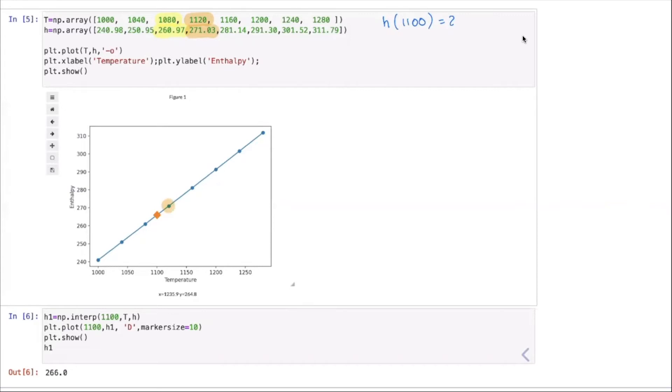This is the second point and the first point is this x1, so let me put the corresponding values in the axis. For simplicity I'm going to call them x1, x2, y1, y2, so this is x1, y1 and this is x2, y2. So x1 is 1080, x2 is 1120, y1 is 260.97, y2 is 271.03.